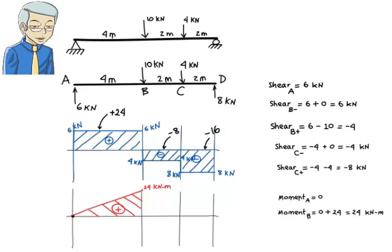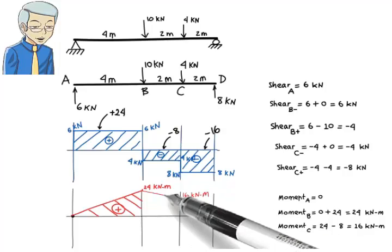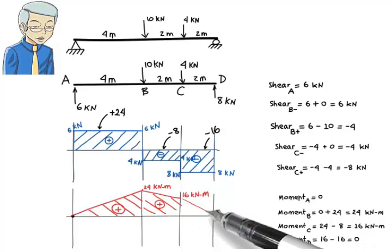For segment BC, moment at the left end of the segment is the same as the moment at the right end of the previous segment, so moment at the left end of segment BC is positive 24. Moment at the right end of segment is 24 plus negative 8, or positive 16. Similar to the previous segment, moment in segment BC varies linearly. Finally, we can draw the moment diagram for segment CD, following the same pattern used for the other segments. Here is the complete moment diagram for the beam.